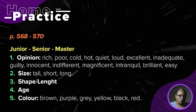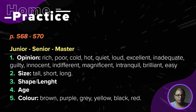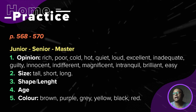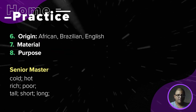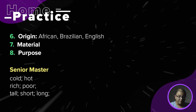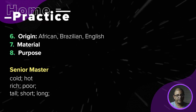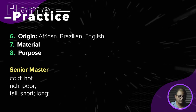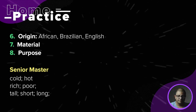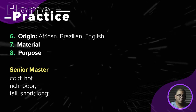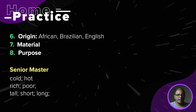For size, we have: tall, short, long. For shape, we don't have any. For age, we don't have any. For color, we have: brown, purple, gray, yellow, black, and red. For origin, we have: African, Brazilian, and English.